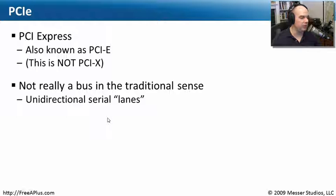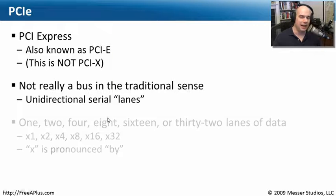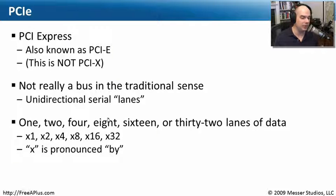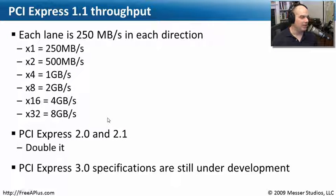With PCI Express you have something called a unidirectional serial lane. These lanes of data come in configurations: x1, x2, x4, x8, x16, and x32. The more lanes of traffic you set up, the more data you would be able to transfer. You didn't send everything down one wider connection — we were essentially running out of real estate.